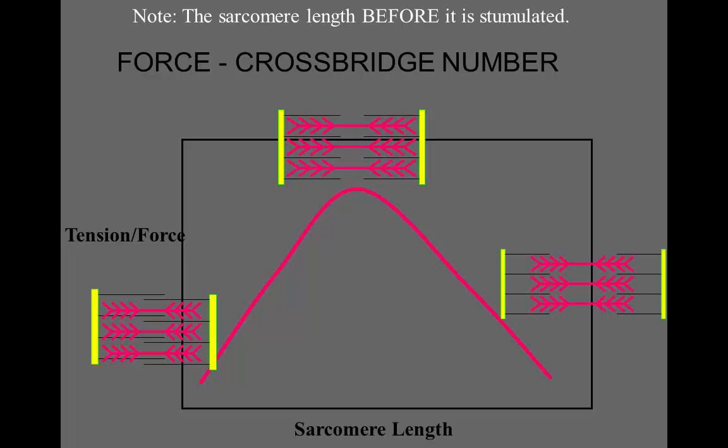On the other side of the graph, when the sarcomere length is stretched out, the actin filaments are pulled away from the myosin filaments and there's less cross-bridge site attachment available. If you have less cross-bridge number, you have less force produced and so you have a lower force at long sarcomere length. When you're too short, it's not optimal, less force produced. When it's too long, the sarcomere is too long, less force is produced. And right in the middle is just right.